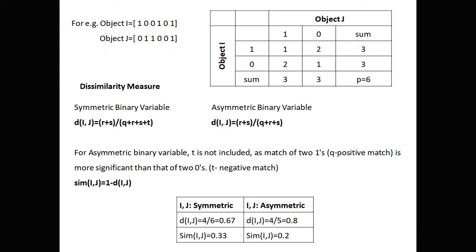Consider a simple example with object i and object j and their binary states. The combination (1,1) occurs 1 time, (1,0) occurs 2 times, (0,1) occurs 2 times, and (0,0) occurs 1 time. So we get Q = 1, R = 2, S = 2, T = 1.